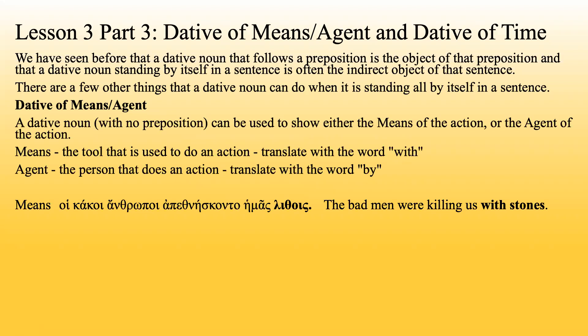An example of means: 'The bad men were killing us with stones.' You'll notice there's no 'with' in this sentence — no preposition, no 'sun' or 'meta.' We just have a noun in the dative. It wouldn't make any sense to translate this as an indirect object: 'The bad men were killing us to stones' — that doesn't make any sense. This is the tool that they were using, the means that they used.